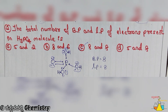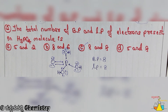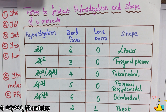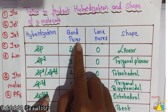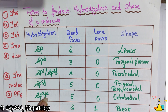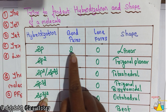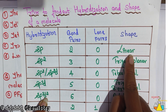It's easy to calculate the bond pairs and lone pairs. So the second trick — trick number two — is hybridization and shape of a molecule. It's easy to calculate bond pairs and lone pairs.